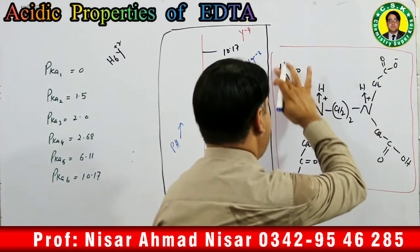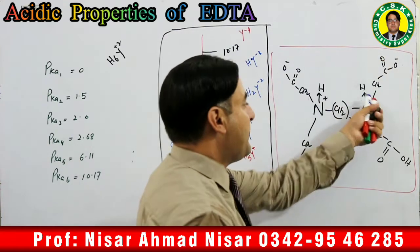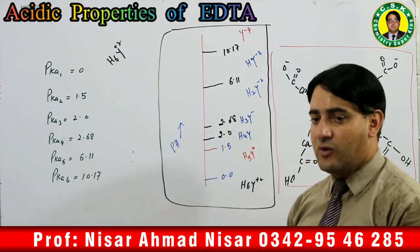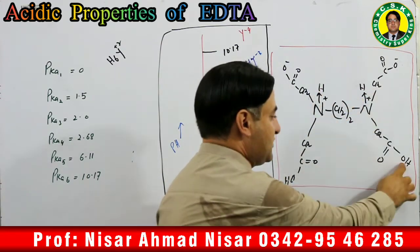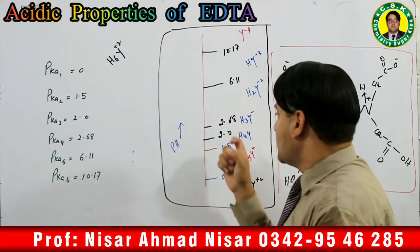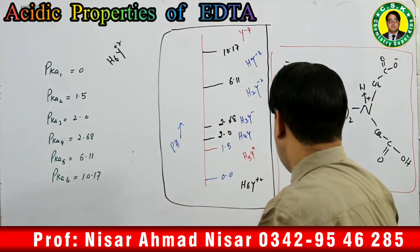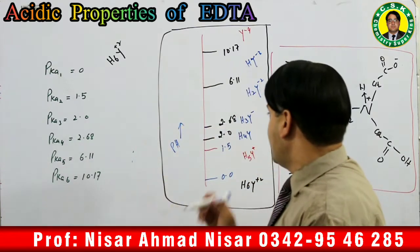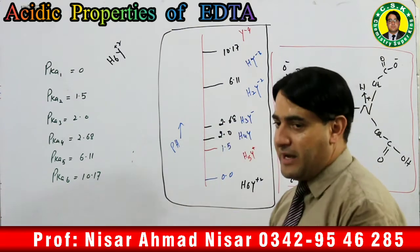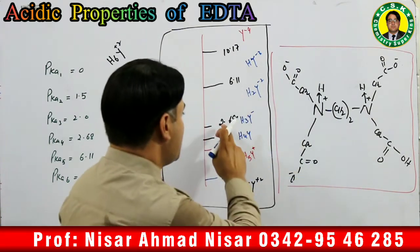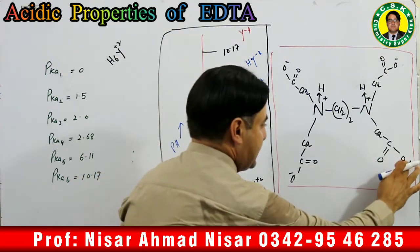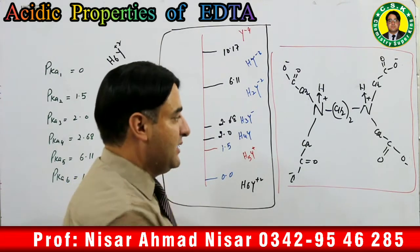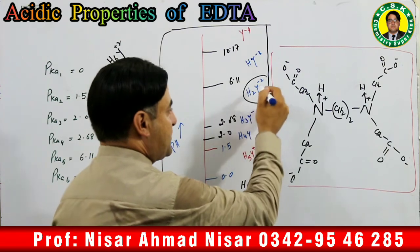When pH is between 2 and 2.8, another proton is removed — 3 negative and 2 positive charges — net charge −1 — giving H₃Y⁻. When pH is between 2.68 and 6.11, a fourth proton is removed — 4 negative and 2 positive — net charge −2 — giving H₂Y²⁻. Note that in H₂Y²⁻, four protons have already been removed; two remain. When pH is between 6.11 and 10.17, another proton is removed — net charge −3 — giving HY³⁻.